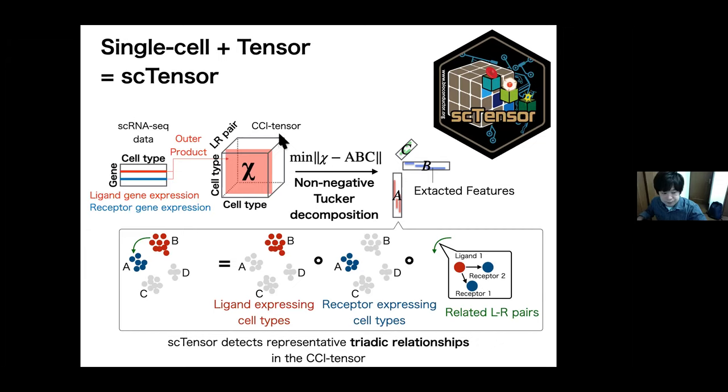Then, I performed a tensor decomposition algorithm, a non-negative Tucker decomposition against CCI tensor. By this decomposition, we can see the representative triadic relationships in the CCI tensor. That is, we can see the correspondents between ligand expressing cell types, receptor-expressing cell types, and related LR pairs.